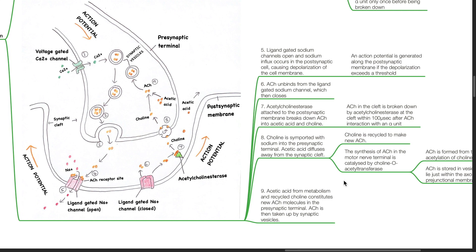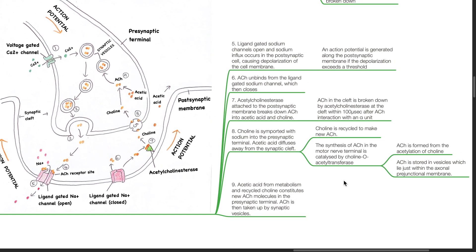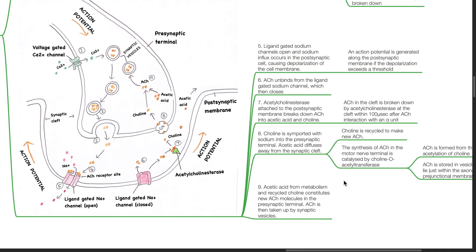Choline is recycled to make new acetylcholine. The synthesis of acetylcholine in the motor nerve terminal is catalyzed by choline O-acetyltransferase. Acetylcholine is formed from the acetylation of choline. Acetylcholine is stored in vesicles which lie just within the axonal prejunctional membrane. Acetic acid from metabolism and recycled choline constitutes new acetylcholine molecules in the presynaptic terminal. Acetylcholine is then taken up by synaptic vesicles.